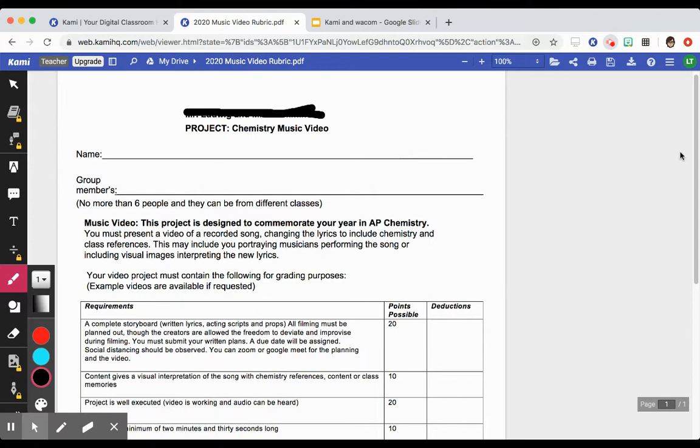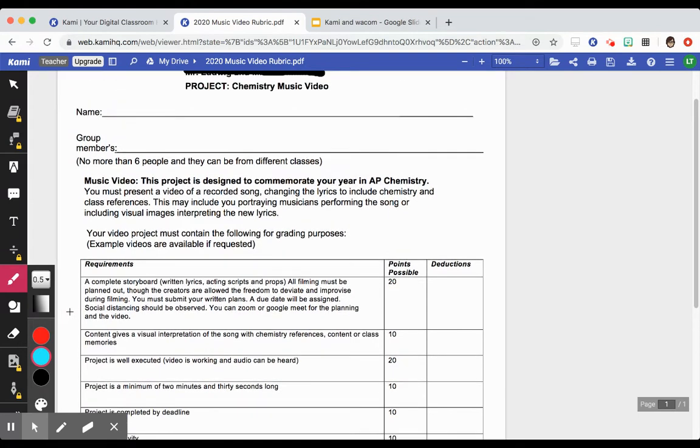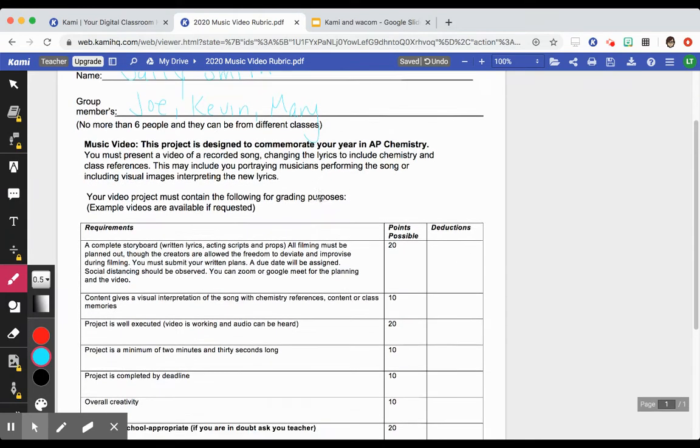Here's another way you can use Kami. If you want to use the Wacom tablet with the Kami app, you can fill out a rubric that you'd normally do on paper. Let's say the student's name is Sally Smith, and the other group members were Joe, Kevin, and Mary. Now we can go through, and notice it stays where I put it.